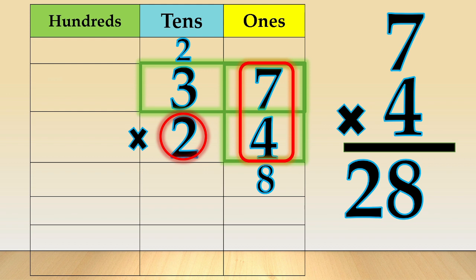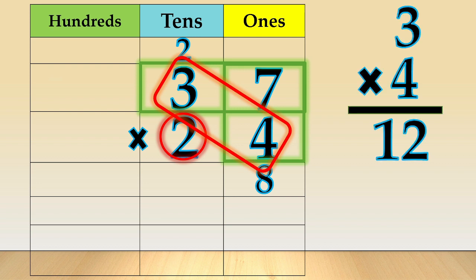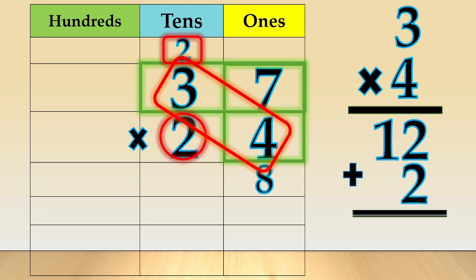Next, we do 3 times 4. 3 times 4 is equal to 12. Add the 2 tens that you have carried over: 12 plus 2 is equal to 14. We write 4 in the tens column and 1 in the hundreds column.